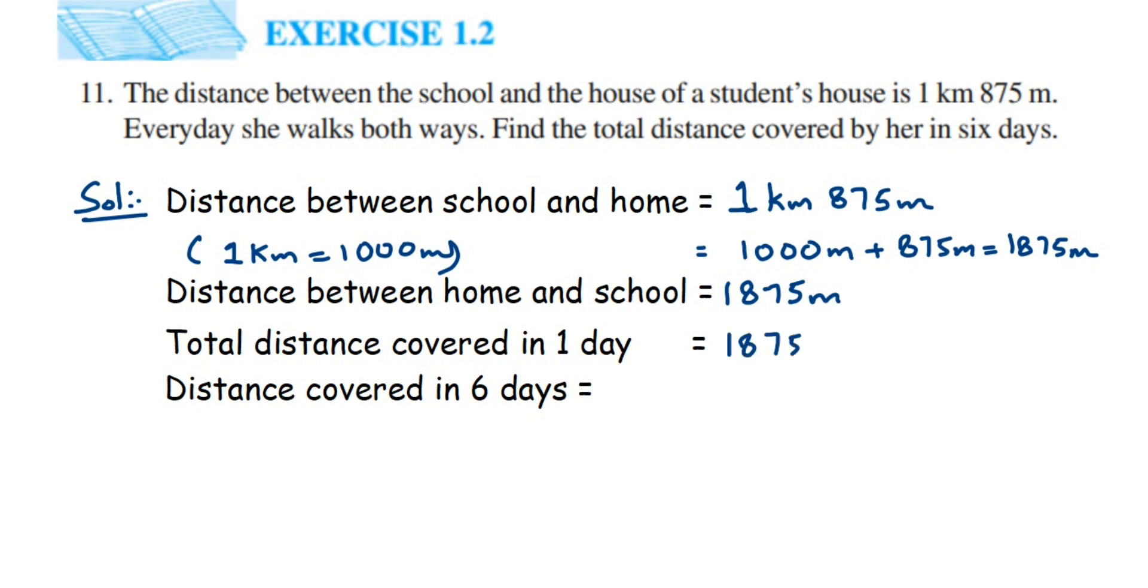So 1875 meters plus 1875 meters gives us 3750 meters, or 3.75 kilometers if you put it in kilometers. I've converted the answer to meters, so 3750 meters for both going and coming back.